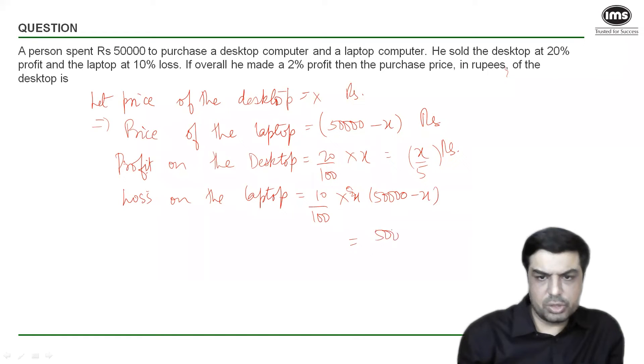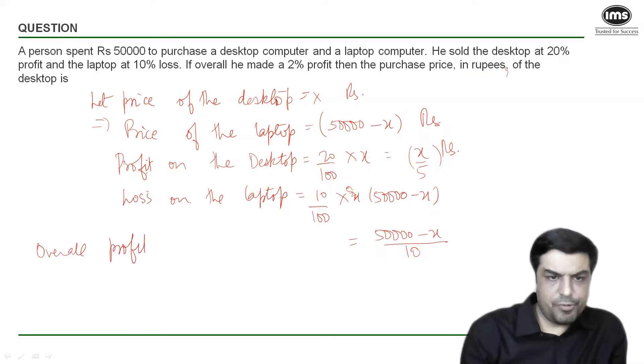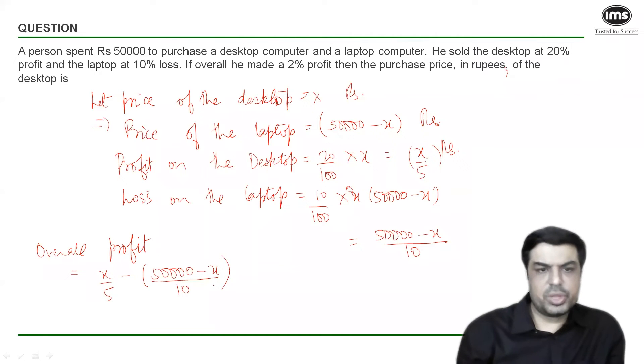What is the overall profit that he makes? It is nothing but the profit on the desktop minus the loss on the laptop. Because it's a loss, it's negative, so the overall profit should be x by 5 minus (50,000 minus x) by 10. This overall profit is given to us. He has made overall 2% profit on the purchase price. His purchase price was 50,000, so this overall profit is simply 2% of 50,000, which is 1,000 rupees.